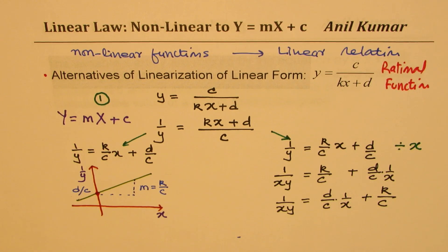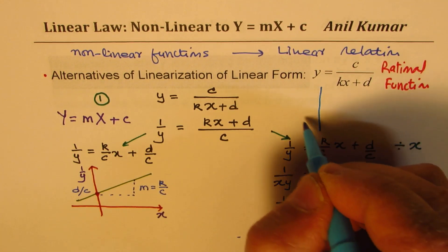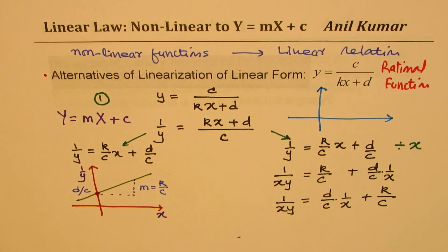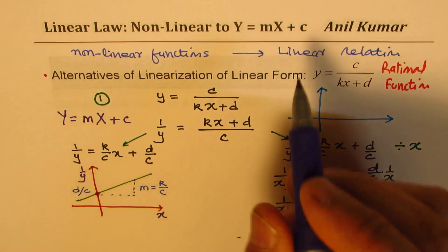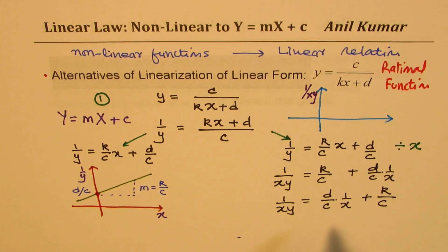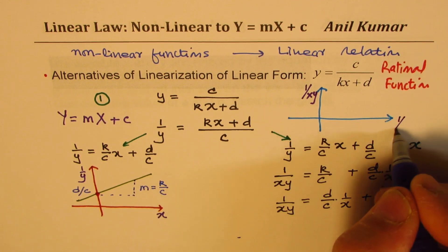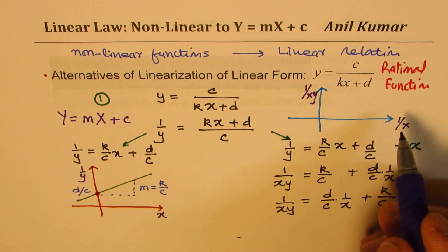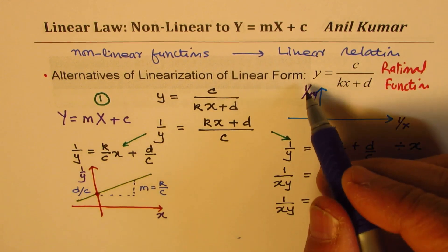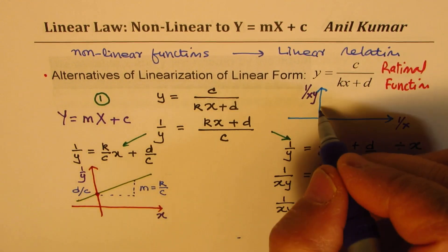So, if you have the second form, then you could sketch something like this. Let's work with this form. So, here, what you notice is that on the y-axis, this capital Y which we talk about, will have one over xy. And here, on the x-axis, we have one over x. In this particular case, the intercept on one over xy is k over c.